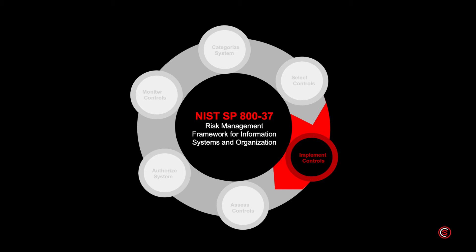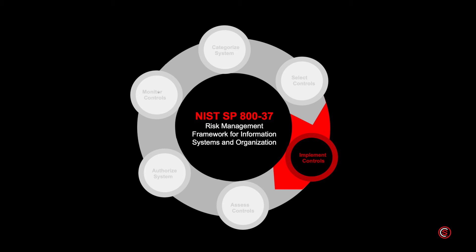Step three is to implement security controls. Implement the controls defined in the security and privacy plans and document them in a baseline configuration detailing how the controls are deployed within the system and its environment of operation. This step should be integrated into the development phase of the SDLC.